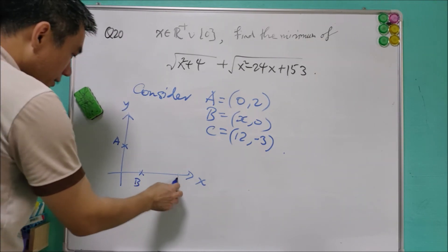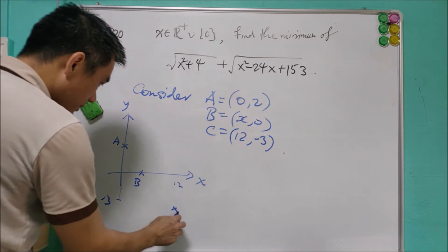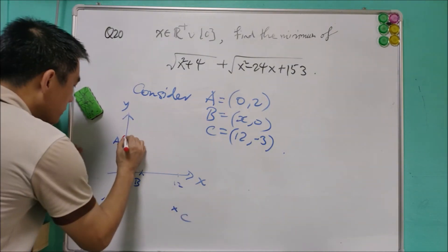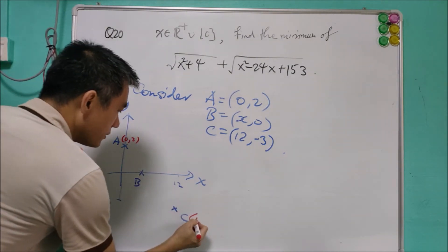C is a fixed point that is 12 and negative 3. So this is C. So this is 0, 2. This is 12, negative 3.